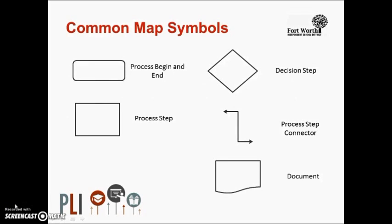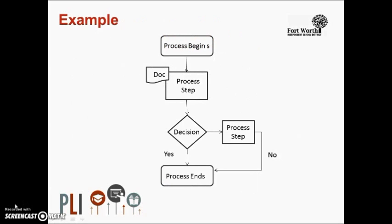Now that your new process has been determined, it is time to transfer it from post-it notes to a process map. The symbols on the screen are the most commonly used graphics in a process map. The first and last symbol is the oval, which symbolizes the beginning and end of the process. The square symbol is used for each action step, containing a verb and a responsible party. The diamond shape symbolizes a decision point where the outcome is either yes or no. All steps are connected using connection lines with an arrow illustrating the direction of the process. The document shape is used to highlight steps that reference a document.